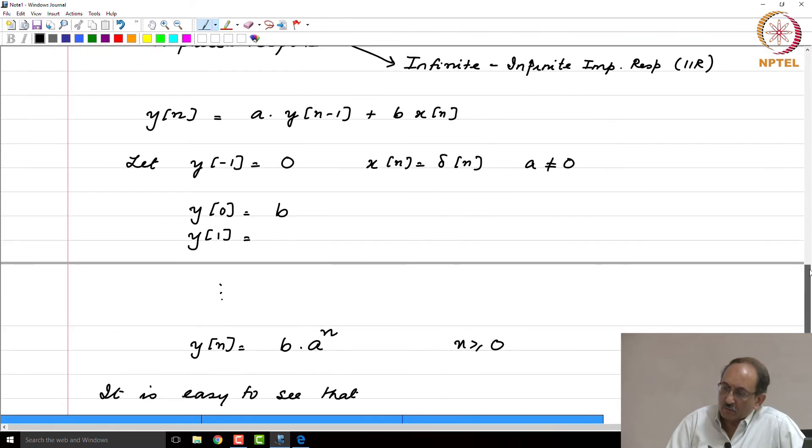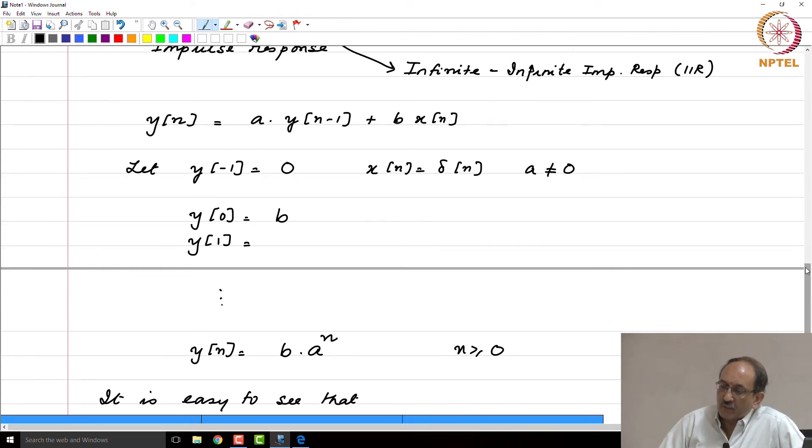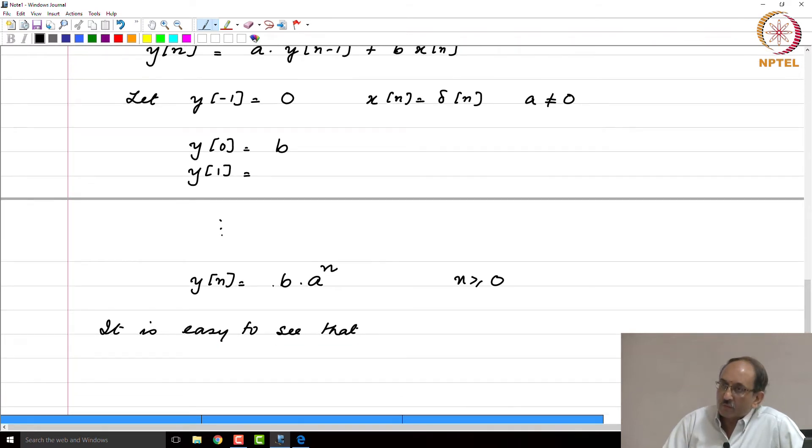This particular system, y(n) = A*y(n-1) + B*x(n) - clearly the input x(n) is δ(n) which is the impulse. Therefore, y(n) that we have obtained here is really not y(n), but h(n) because we always use the special notation h to denote impulse response.